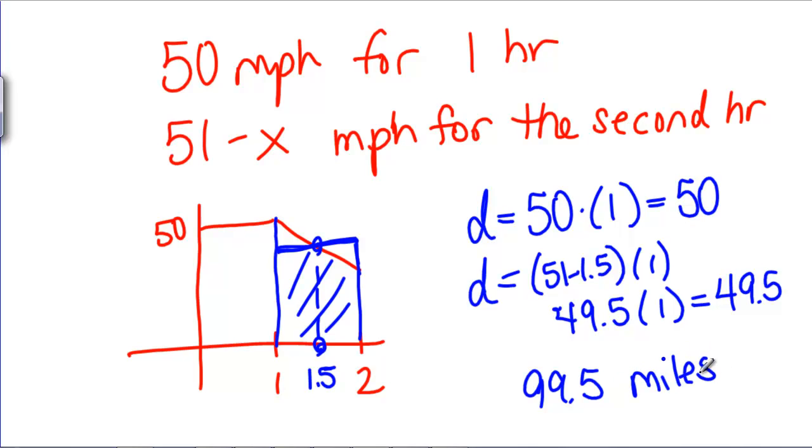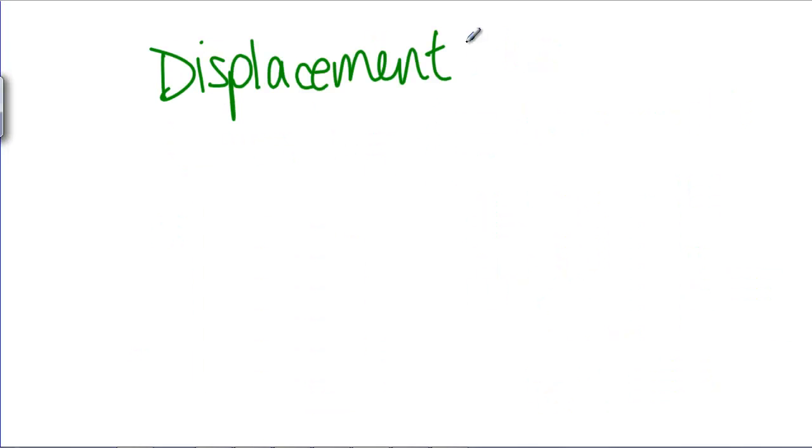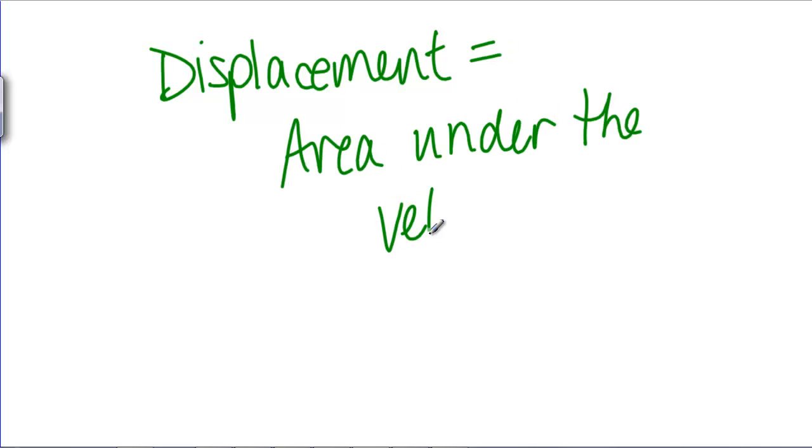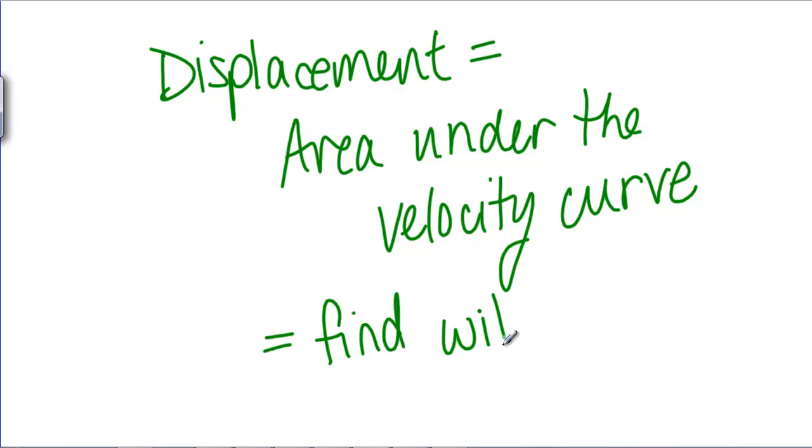But this would look familiar. In fact, what we just did here in this second rectangle is exactly a midpoint Riemann sum. What you want to notice here is that displacement is actually equal to the area under the velocity curve, and we can find it with Riemann sums.